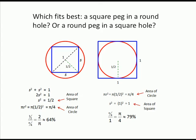And there's your answer. Ta-da! So a round peg inside of a square hole is a much better fit. Thanks for watching!